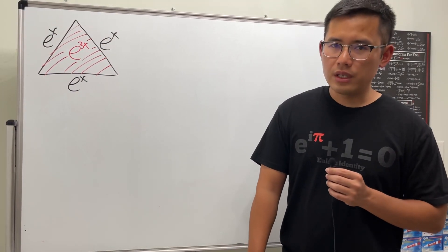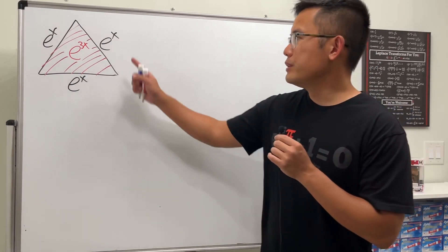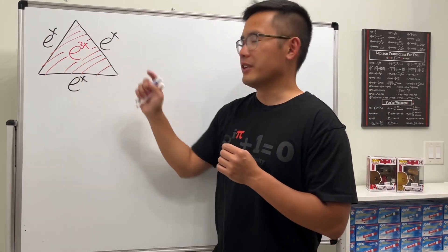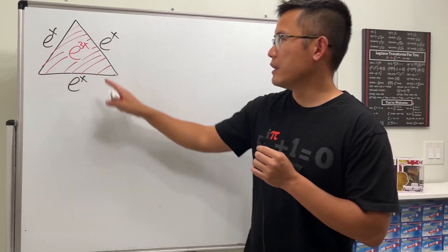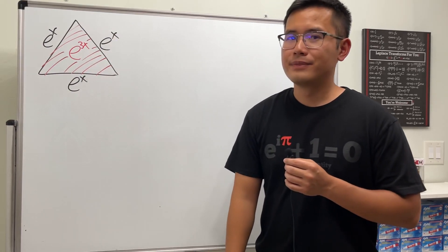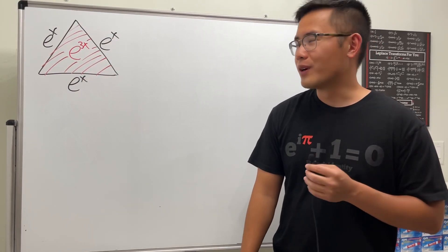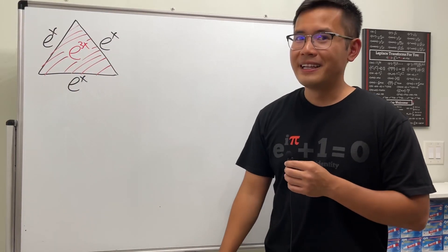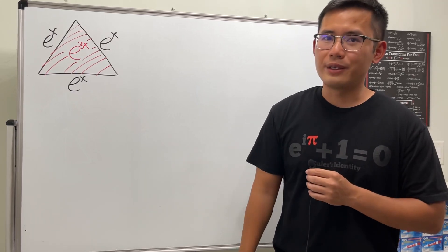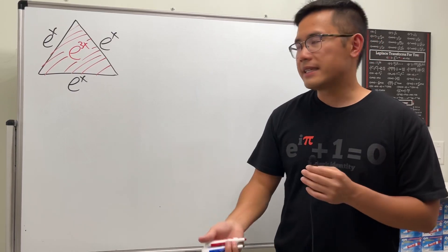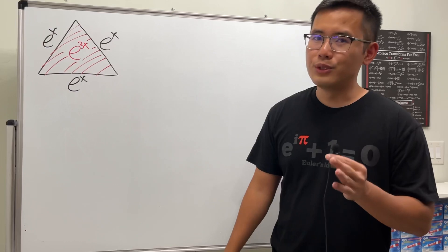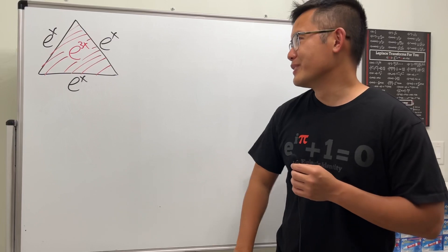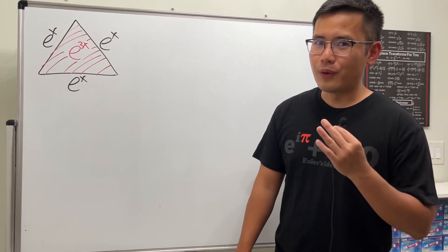I have another exponential triangle problem. This time I put e to the x on all sides of an equilateral triangle, meaning all sides are the same, and we want the area to be e to the 3x. We want to find x to make this true. Of course you can't just multiply e^x · e^x · e^x — that's not how you find the area of an equilateral triangle. Please pause and try this first.